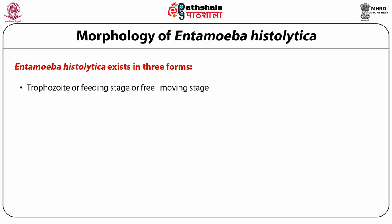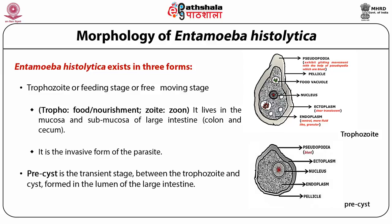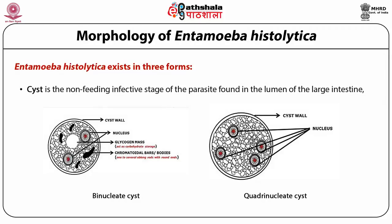The trophozoite is the only feeding and free-moving stage — 'trophos' means food and nourishment, 'zooid' means animal. It lives in the mucosa and submucosa of the large intestine and is the invasive form. The precyst is a transient stage between the trophozoite and the cyst, formed in the lumen of the large intestine. The cyst is the non-feeding, infective stage found in the lumen of the large intestine.